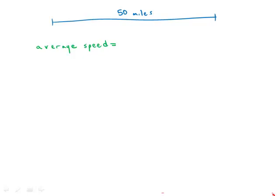And so average speed, the formula for that, is total distance divided by total time. And notice here, the total distance is 50 miles. So we already know that.